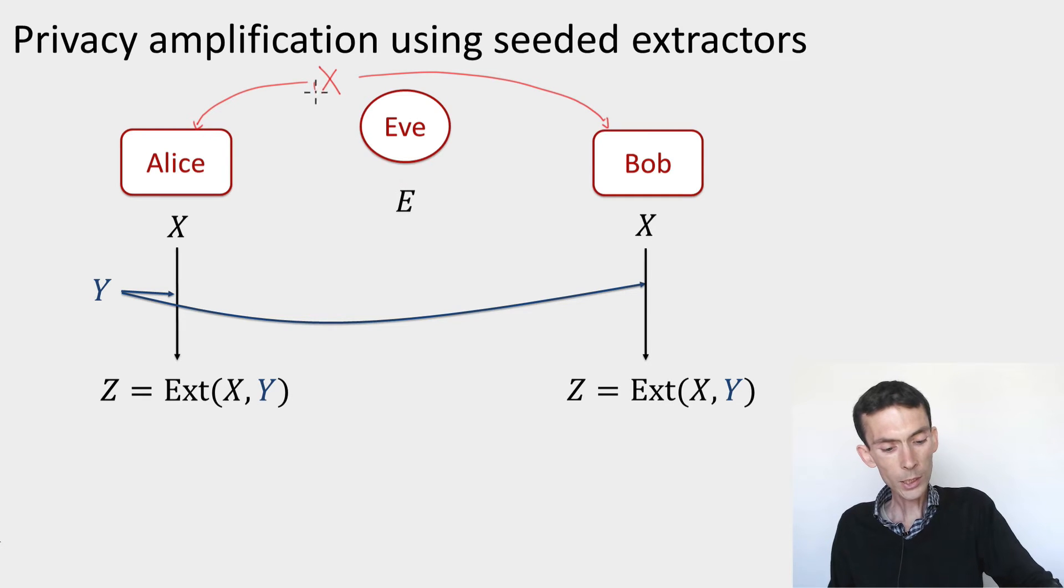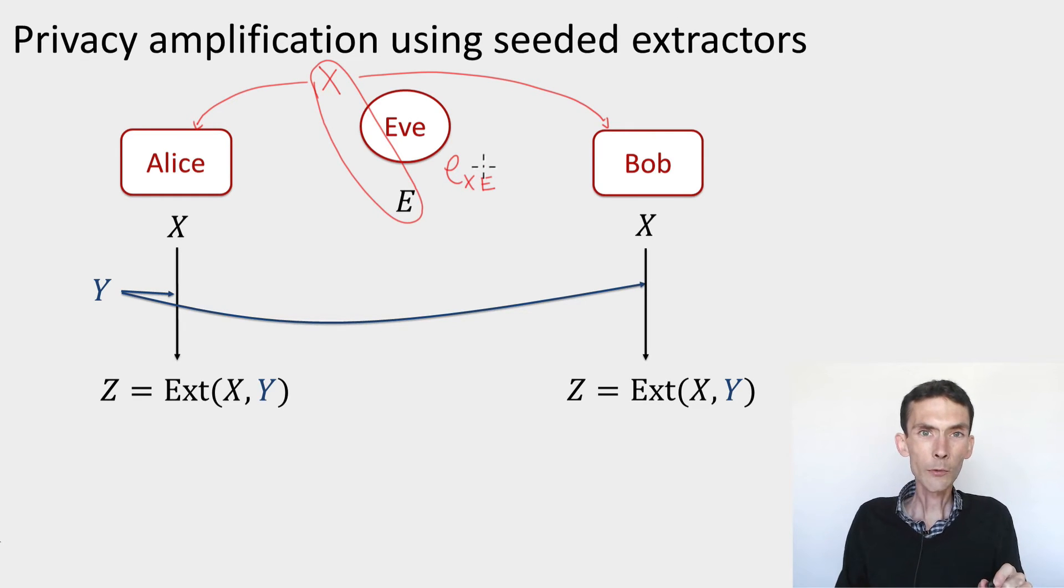This string X is communicated to both Alice and Bob, but Eve has some side information that can be correlated with X. And this is represented by a cq state ρ_XE. So that's exactly the setup for privacy amplification. It's also exactly the setup for randomness extraction.